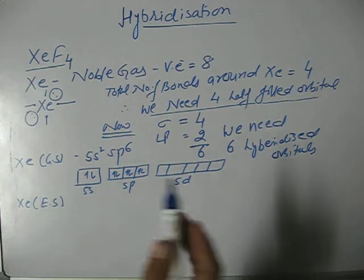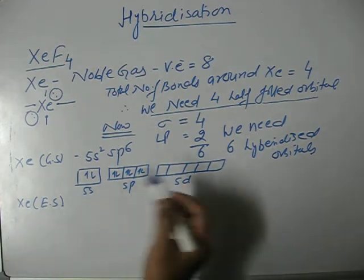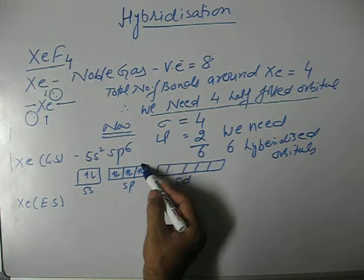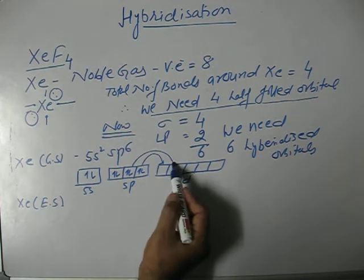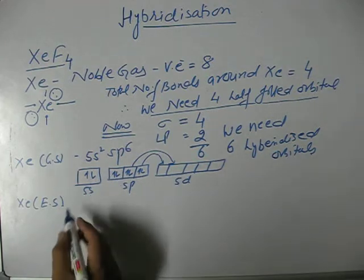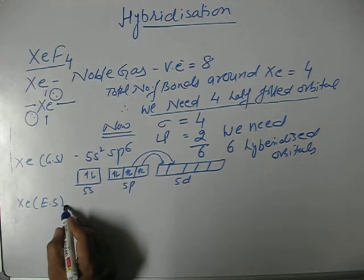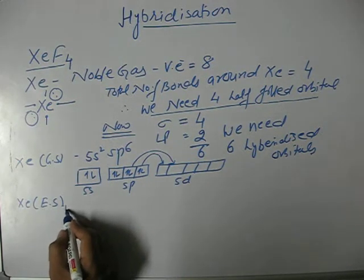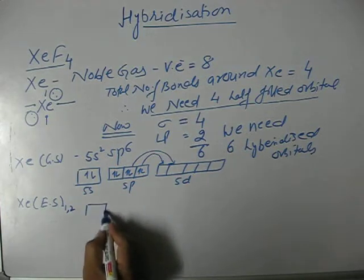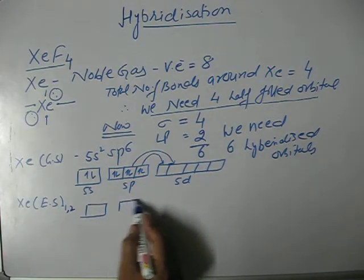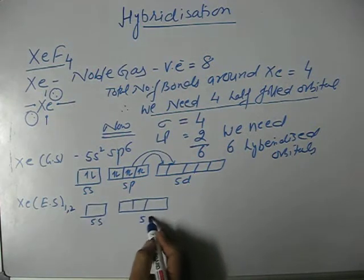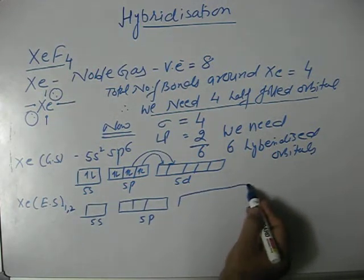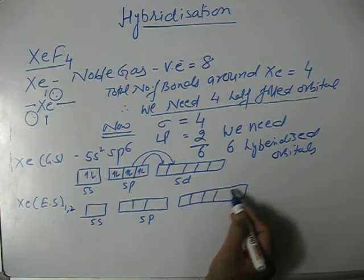For that purpose, we need 4 half-filled orbitals. We will just shift the electrons of 5p into 5d orbital so that we can see excited state 1 and excited state 2. As a result, we have got the situation in which xenon is having 4 half-filled orbitals.